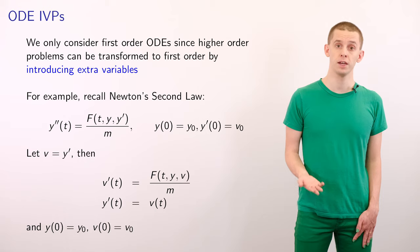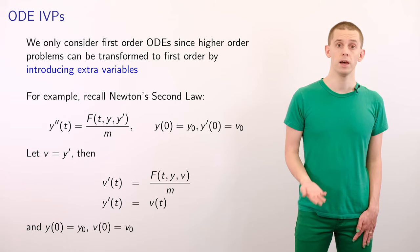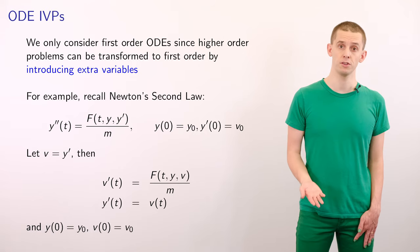And y prime is equal to v. And we have initial data now, y of 0 is equal to y subscript 0.